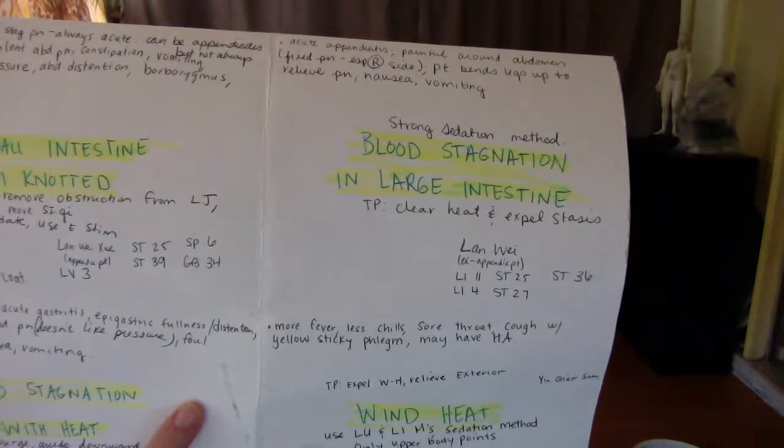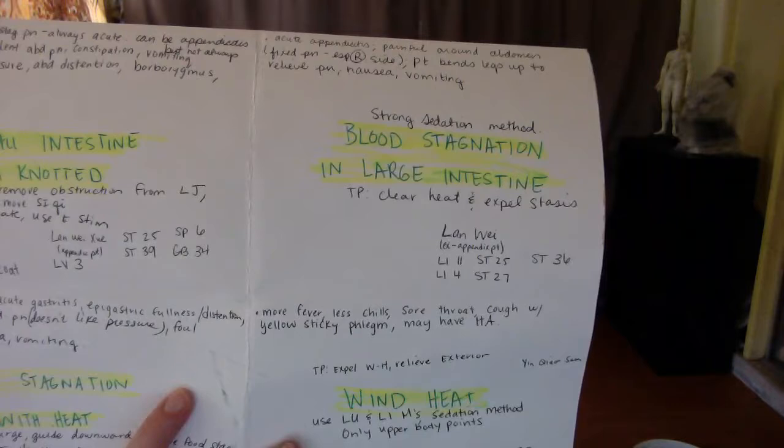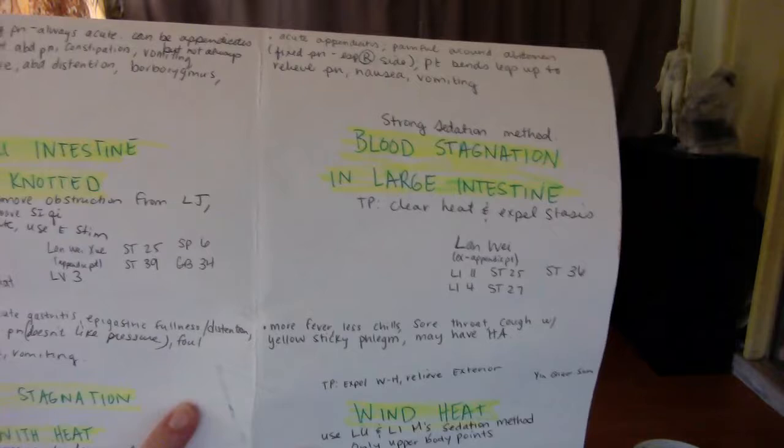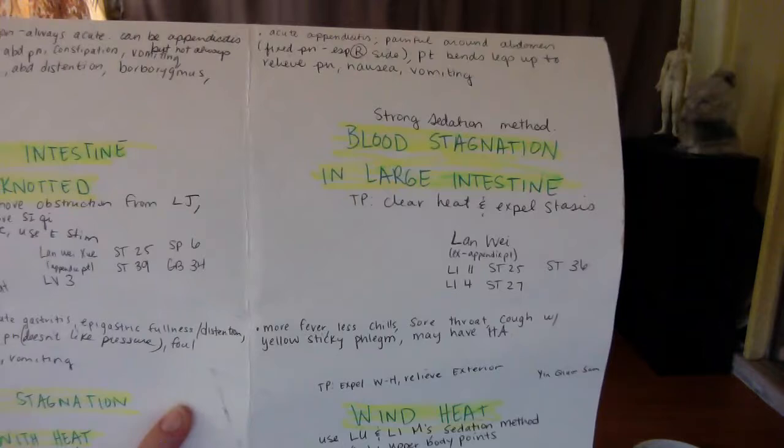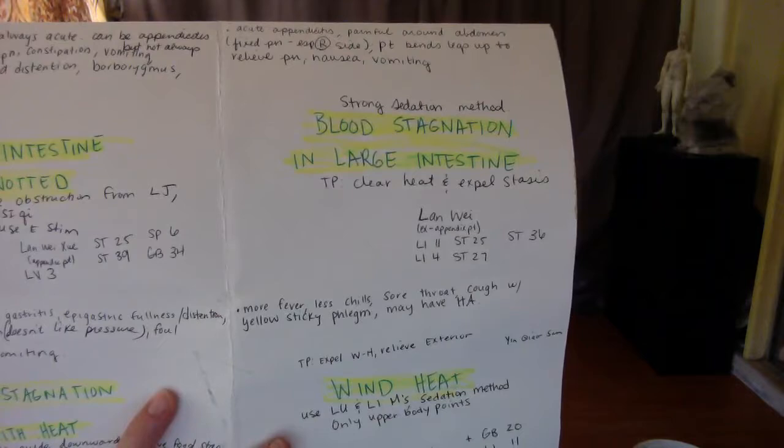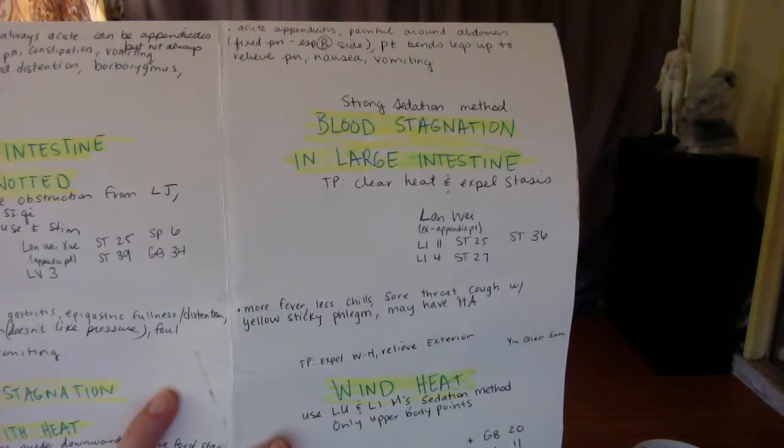Blood stagnation in the large intestine treatment principle is to clear heat and expel stasis. We use a strong sedation method. For the points combination, we have the LON-Way, the appendix point, LI-11, LI-4, stomach 25, stomach 27, stomach 36.